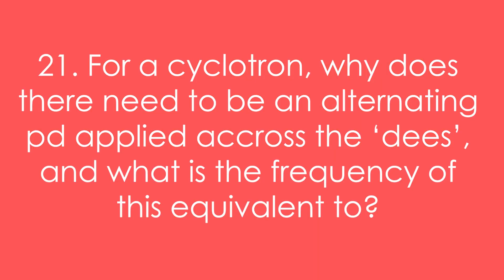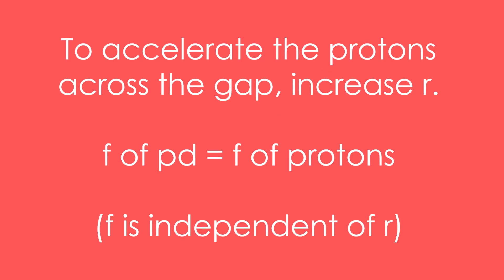Question 21: For a cyclotron, why does there need to be an alternating PD applied across the Ds, and what is the frequency of this equivalent to? It's to accelerate the protons across the gap and increase the radius. The frequency of this alternating PD is the same as the frequency of the protons going around in their circles — and this is independent of how big the circles are, because frequency is independent of the radius.